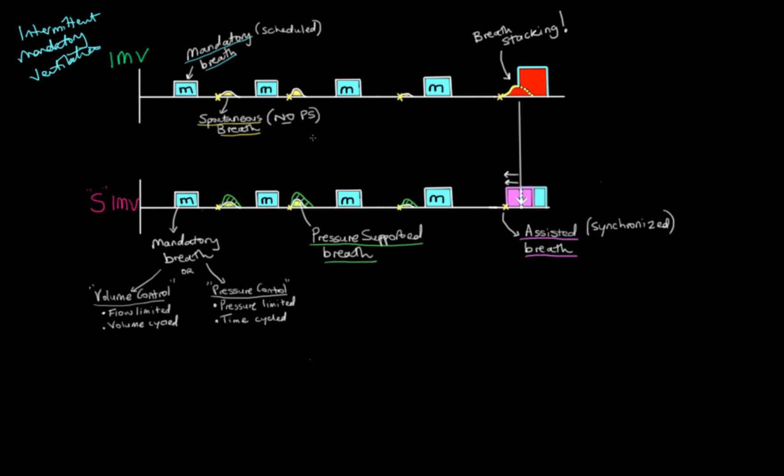So that doesn't sound too bad, right? That sounds like the patient can do a little bit of breathing on their own and get some mandatory breaths as well so we can control their blood gases. But the problem with these spontaneous breaths in between these mandatory breaths is that they don't receive any pressure support. And one of the big reasons we give pressure support is because trying to breathe through a very narrow endotracheal tube causes quite a lot of resistance. It's quite difficult to breathe through an endotracheal tube.